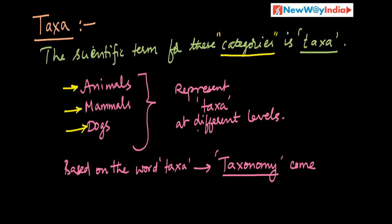But at different levels — this is important. You can't keep dog in the Taxa of animals; dog has a separate Taxa, but they come under animals, mammals, something like that. Based on the word Taxa, Taxonomy came.